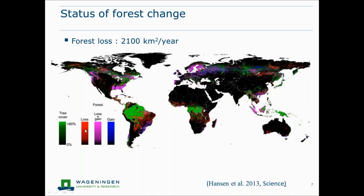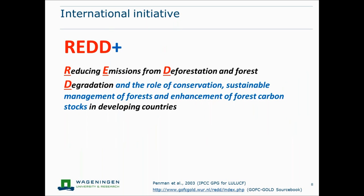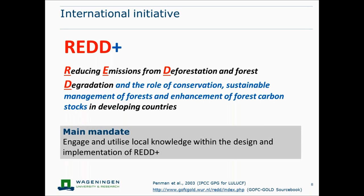Looking at the global forest change map: the green color shows tree cover while red shows loss. There are quite a lot of forests still left in the tropics, but losses are also quite high — estimated at more than 2,000 km² per year. This has attracted international initiatives to protect forests, and that is why REDD Plus has been discussed over the past years: to reduce emissions from deforestation and degradation, engage local communities for conservation, sustainable forest management, and enhance forest carbon stocks.